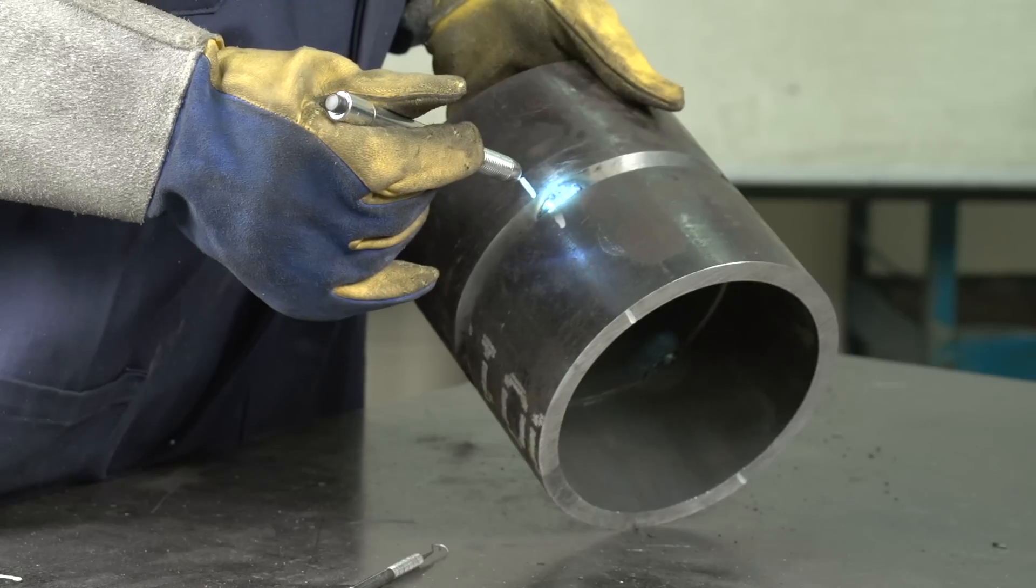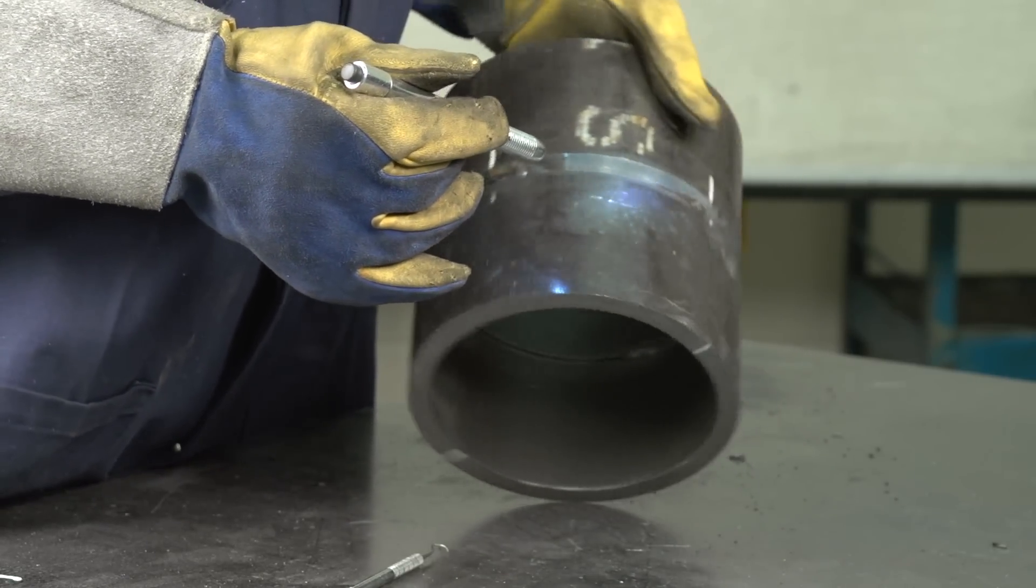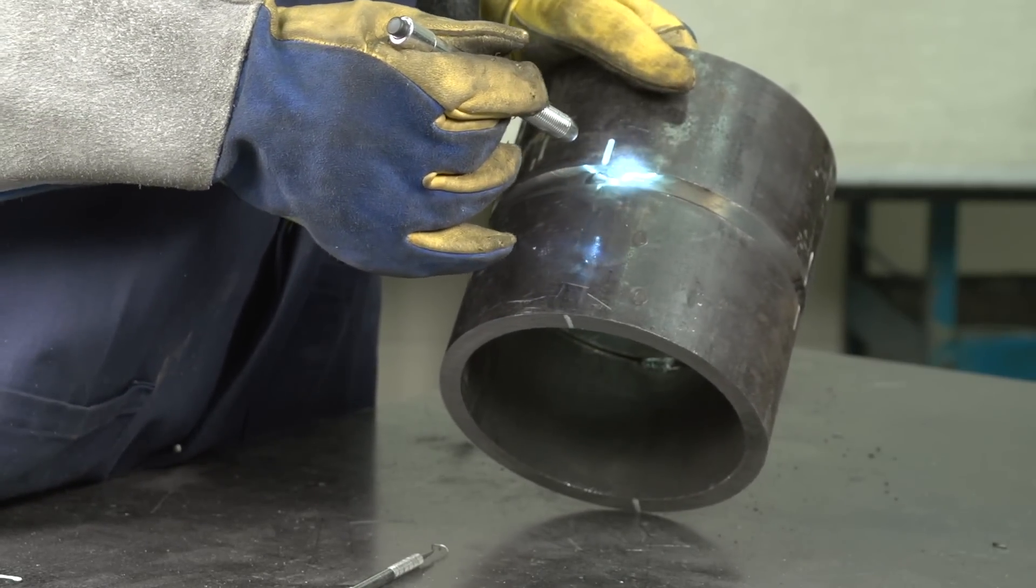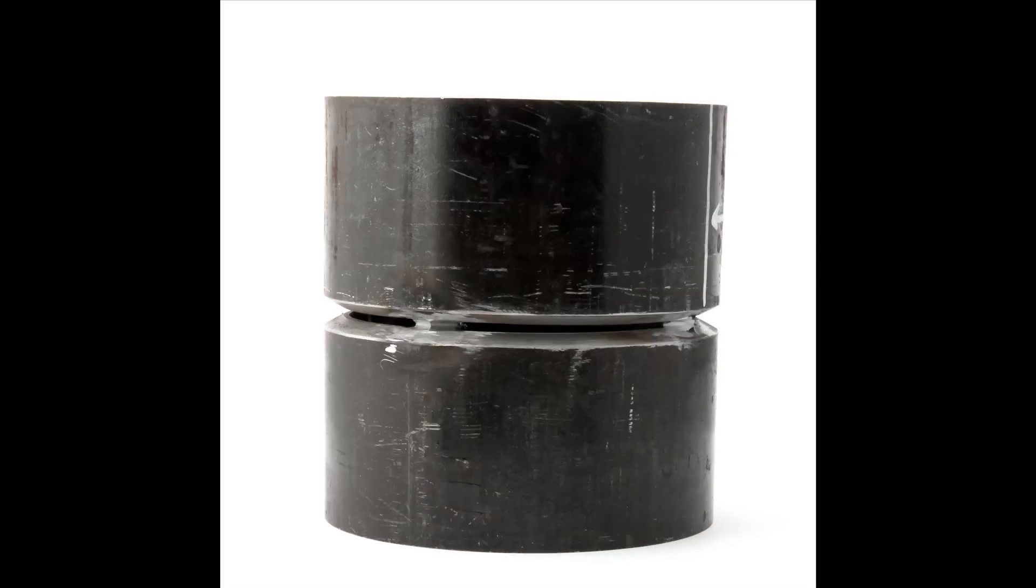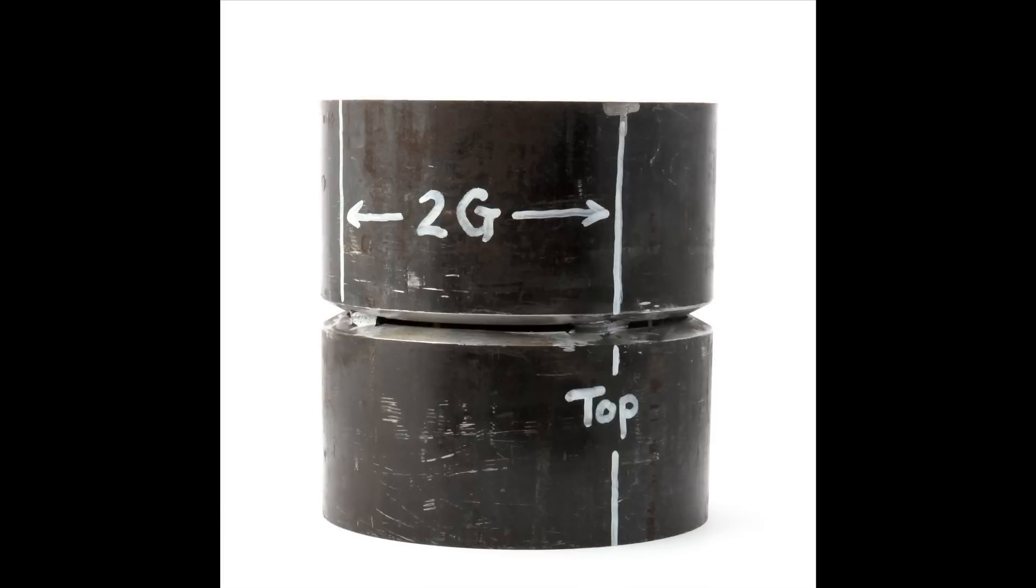After you have completed tacking the coupon, it will be presented to the safety codes officer. If the tacks are accepted, you then decide where the safety codes officer will mark the top dead center and which top section will be the 2G.